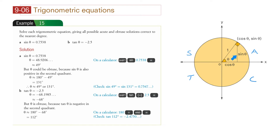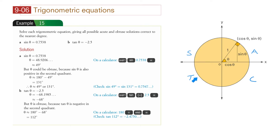That makes sense if we look at the axes: the y-axis measures sine theta and the x-axis measures cosine theta. Sine theta is positive in quadrants 1 and 2 because the value on the y-axis is positive there. In quadrants 3 and 4, sine is negative because the y-axis value is below 0. Similarly, cosine is positive in quadrants 1 and 4 (positive x-axis side), and negative in quadrants 2 and 3.